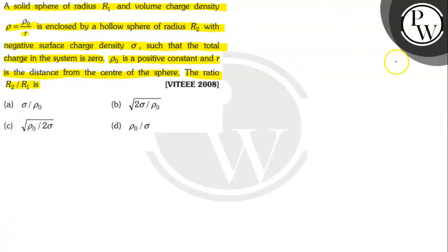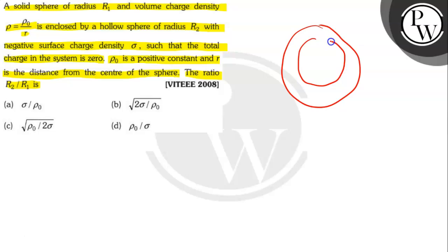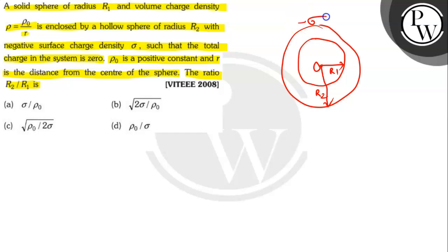Let's draw the diagram first. The first sphere and this one is the second sphere. This one is R1, this one is R2, and this is center O. And this is minus sigma. So here P equals to P0 divided by R.